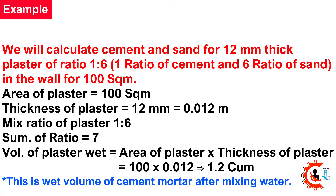Example: We will calculate cement and sand for 12mm thick plaster of ratio 1:6 (1 part cement, 6 parts sand) for 100 square meters. Area of plaster = 100 m². Thickness of plaster = 12mm = 0.012 m. Mix ratio = 1:6. Sum of ratio = 7.